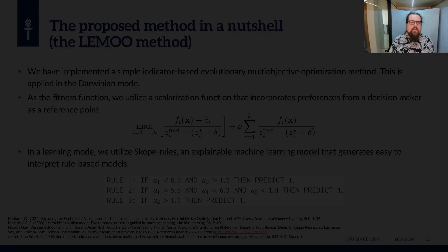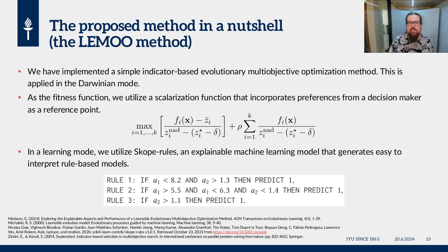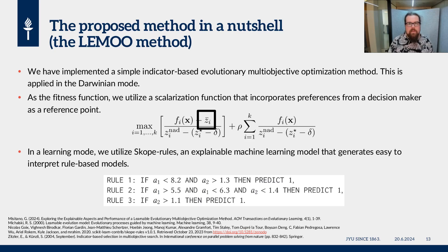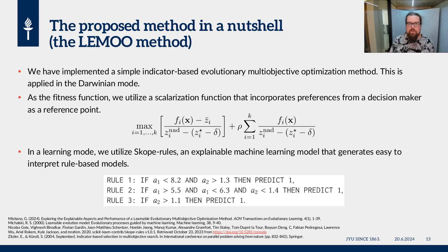In the method, we have implemented a simple indicator-based evolutionary multi-objective optimization method, where we utilize a scalarization function as the fitness function. The set in the function represents the aspiration levels that a decision maker has given — values for objective functions that the decision maker would like to achieve. As the machine learning model, we have utilized SCOPE rules, which is able to generate simple-to-interpret rules that can describe the decision variables in high-performing solutions.